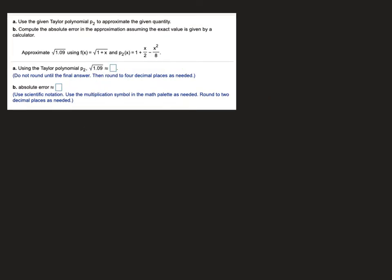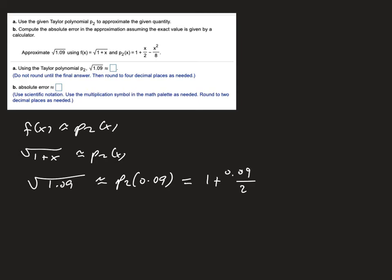The last question, once again, our f of x is approximated by p2 of x, but f of x is the square root of 1 plus x. So if I'm trying to approximate square root of 1.09, that's going to be approximately p2 of 0.09. Plugging 0.09 in for x is what's going to make the function be square root of 1.09.